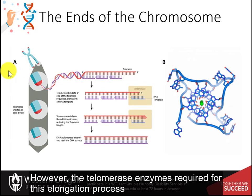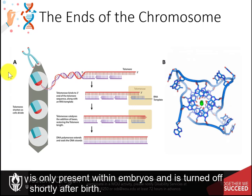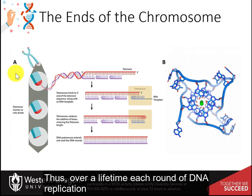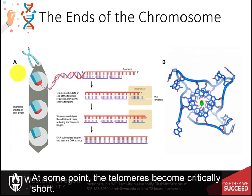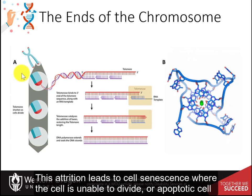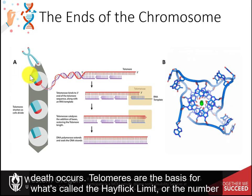However, the telomerase enzyme required for this elongation process is only present within embryos and is turned off shortly after birth. Thus, over a lifetime, each round of DNA replication will result in a shortening of the chromosome. At some point, the telomeres become critically short. This attrition leads to cell senescence, where the cell is unable to divide or apoptotic cell death occurs.